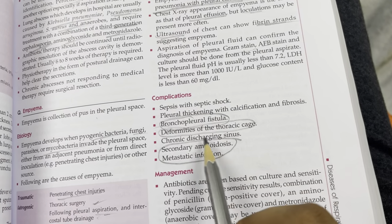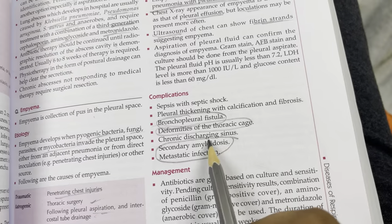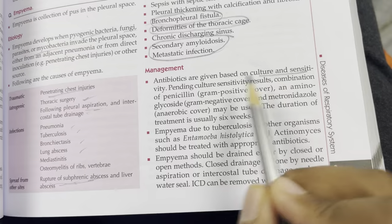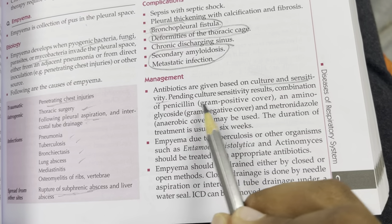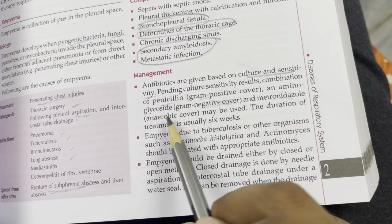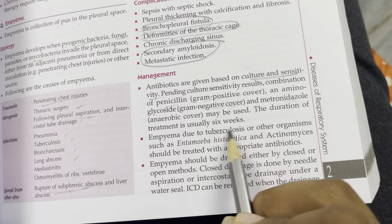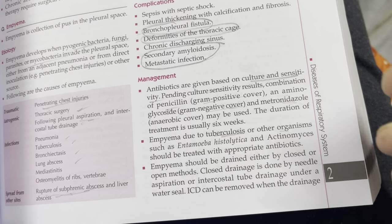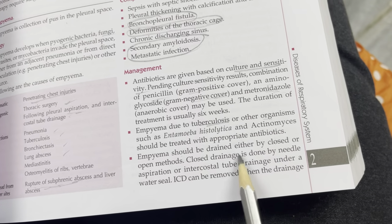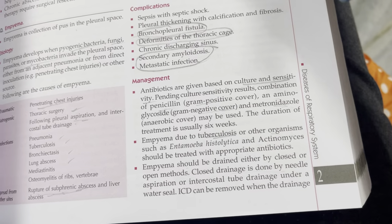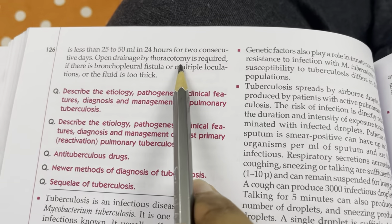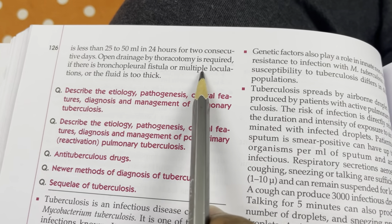Complications of empyema: bronchopleural fistula, amyloidosis (chronic), metastatic infection, and thoracic cage deformities. Antibiotics based on culture sensitivity; pending results, give Gram-positive and Gram-negative cover — penicillin, aminoglycosides, and metronidazole for anaerobes. Six weeks of treatment. TB empyema: anti-TB therapy. Empyema drainage: closed (needle aspiration or intercostal tube) or open drainage (thoracotomy) for fistula, multiple loculations, or thick fluid.